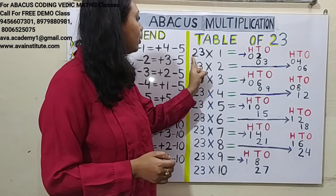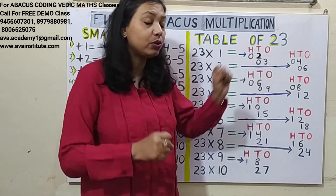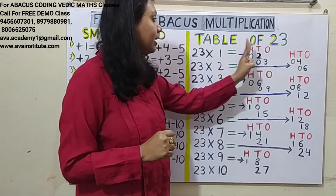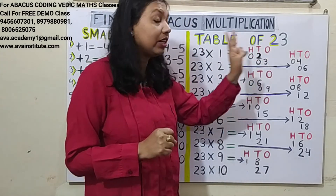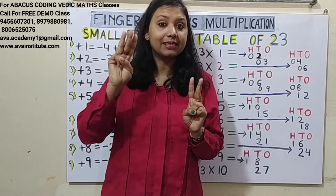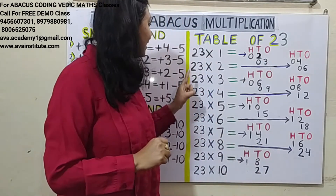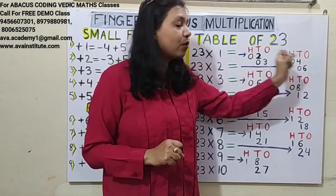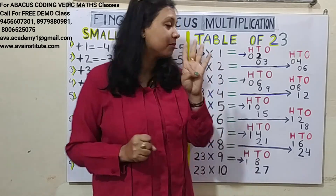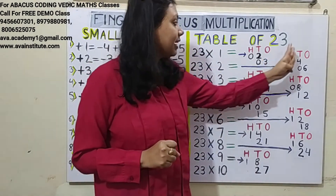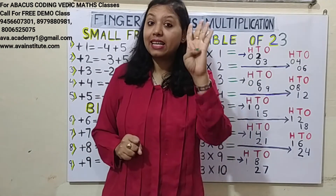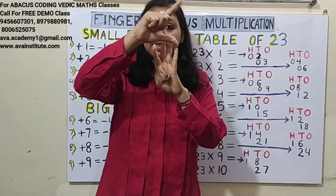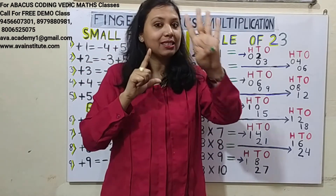23 × 1: 2 × 1 = 2, represent in 100's: 0, in 10's: 2. 3 × 1 = 3, represent in 10's: 0, in 1's: 3. Answer is 23. Next, 23 × 2: 2 × 2 = 4, in 100's: 0, in 10's: 4. 3 × 2 = 6, in 10's: 0, in 1's: 6. Answer is 46.